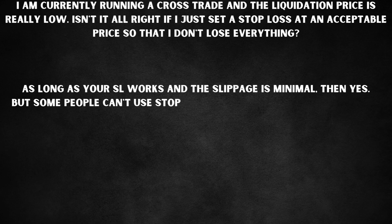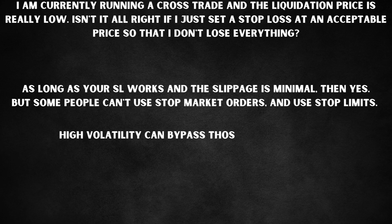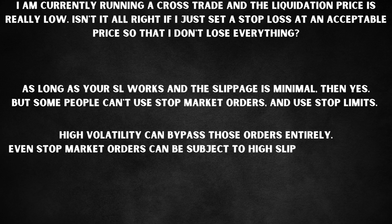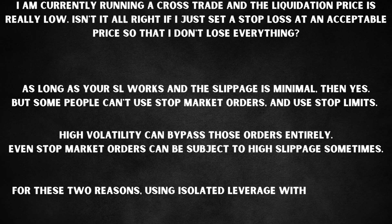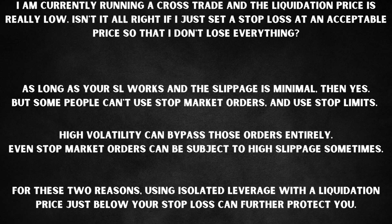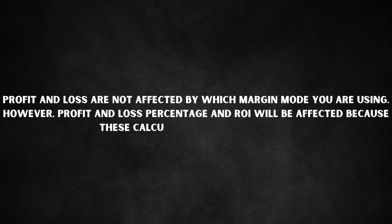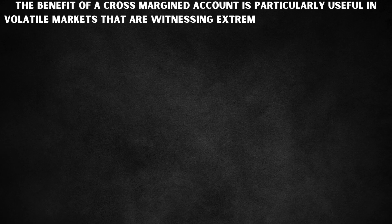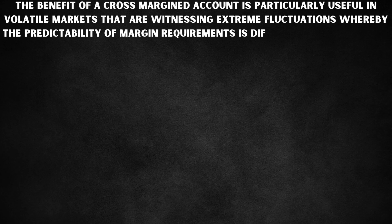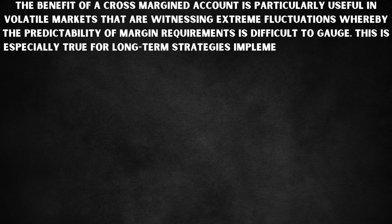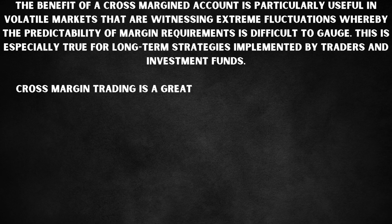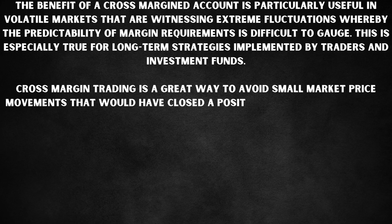As long as your stop loss works and slippage is minimal, then yes. But some people can't use stop market orders and use stop limits instead. High volatility can bypass those orders entirely — your stop loss can be blown through. Even stop market orders can be subject to high slippage sometimes. For these two reasons, using isolated leverage with a liquidation price just below your stop loss can further protect you. Cross margin is particularly useful in volatile markets where the predictability of margin requirements is difficult to gauge, and for avoiding small price movements that would close a position under isolated margin.